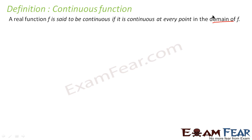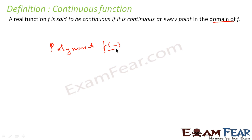Once again, a function is said to be continuous if it is continuous at every point in the domain of f. Normally, the polynomial functions are continuous functions. For example, f(x) = 2x² + 1 — this kind of function is always continuous. And if this function is defined for all real numbers, this is always continuous for any real number.